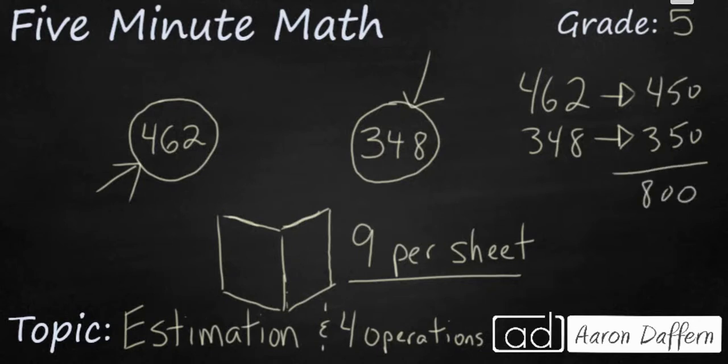Now, I need to divide those 800 cards into nine per sheet. And I know that multiplication facts, 9 times 9 is 81. So if I take my 800 and rewrite it as 810, I know that I'll need about 90 sheets. So that should be your answer.